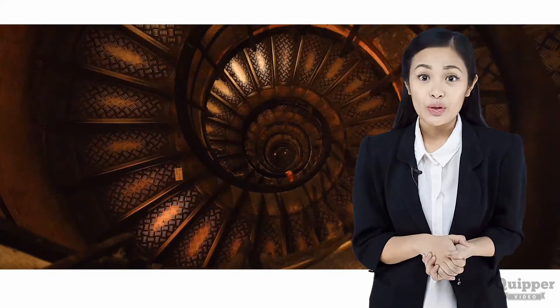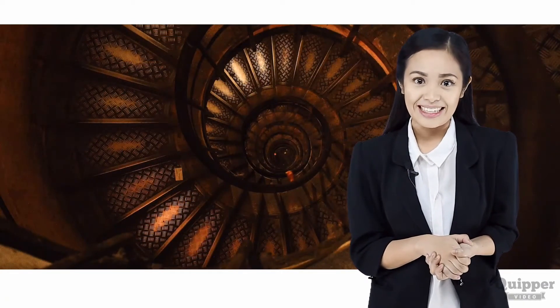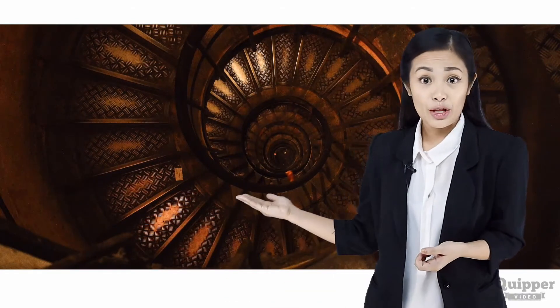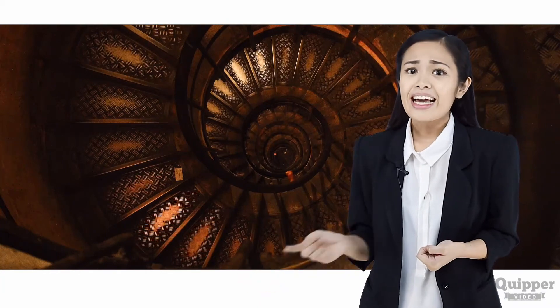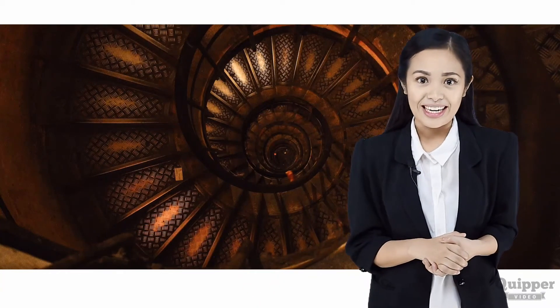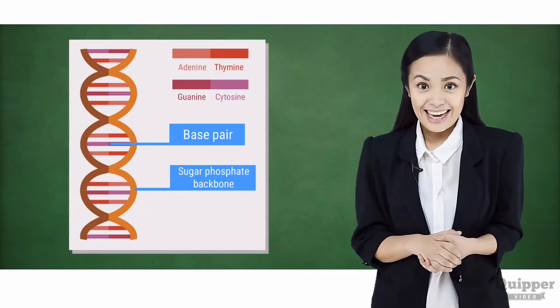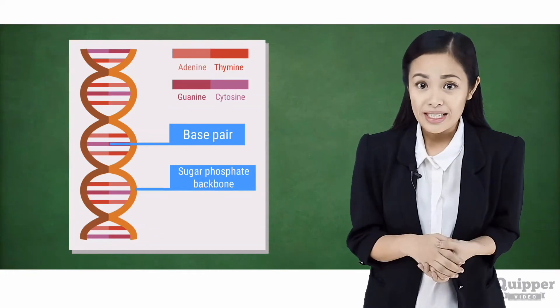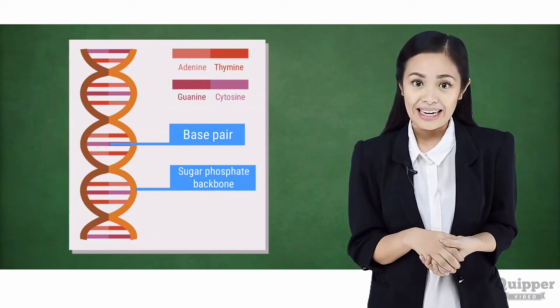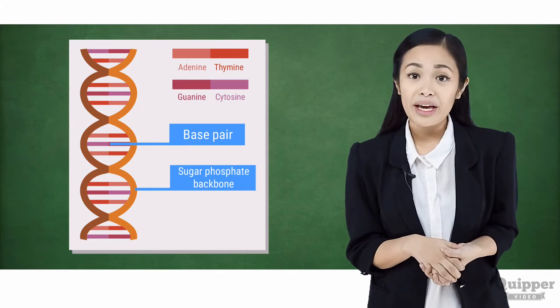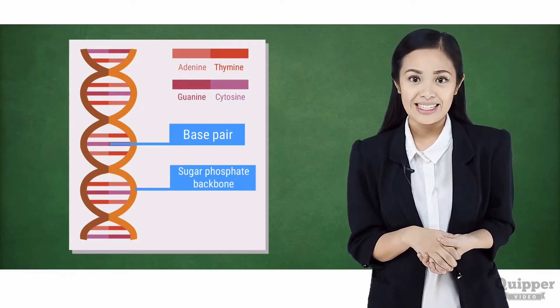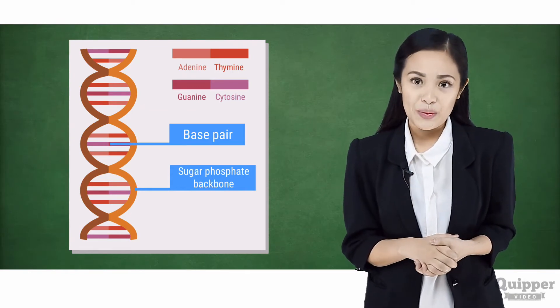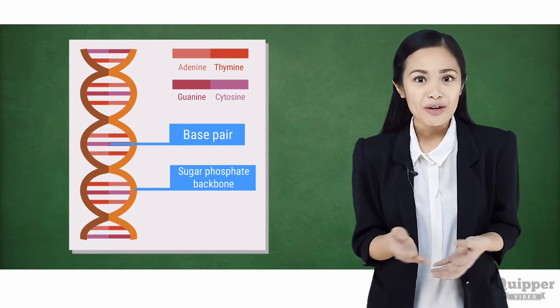That's not all you need to know about the structure of a DNA. If we look at it in a three-dimensional way, it looks like a twisted staircase. See, the staircase twists and forms the double helix DNA strand with varying base sequences.